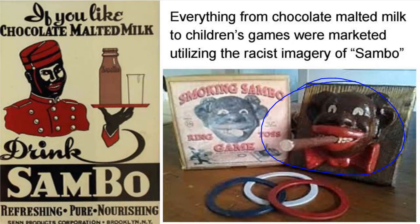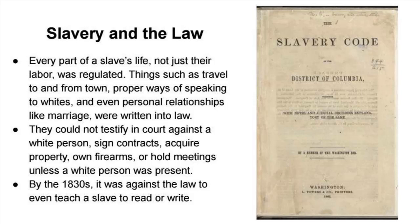Every single part of a slave's life was regulated — not just their labor. Slave codes covered everything from the proper way of speaking to a white person, to personal relationships like marriage, whether an owner would allow a formal marriage. Slaves could not testify in court against a white person, so if a slave woman was raped, she could not speak on her own behalf in court. They could not sign a contract, acquire property, own firearms, or hold a meeting without a white person present. By the 1830s, it was against the law to even teach a slave to read and write.